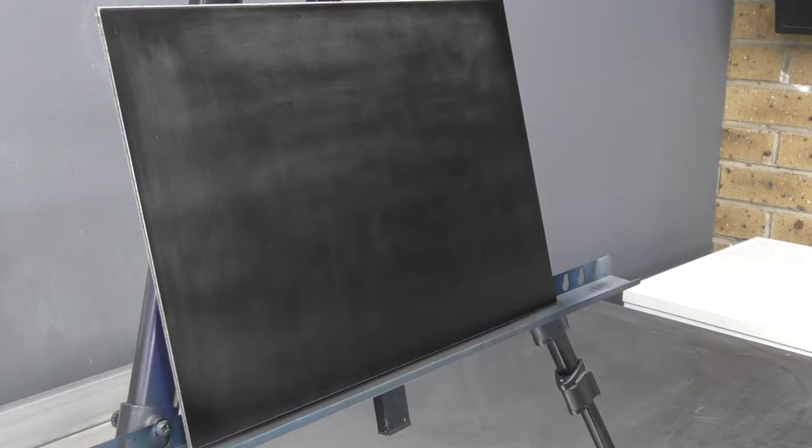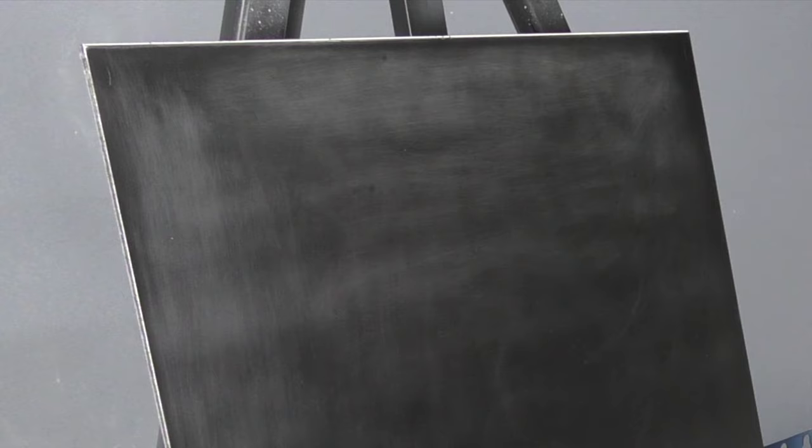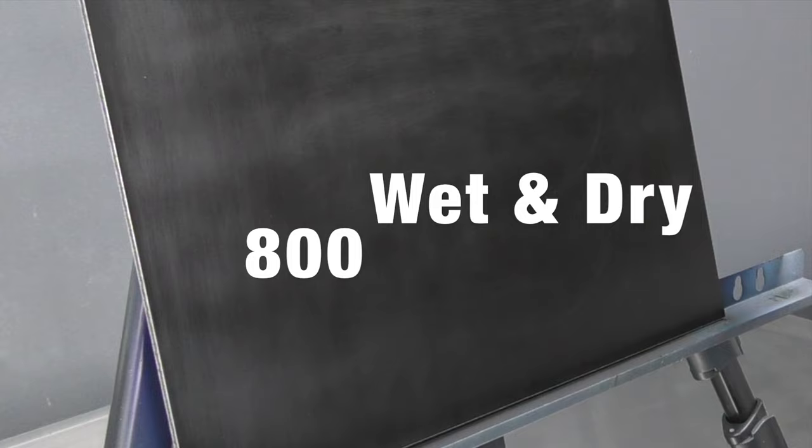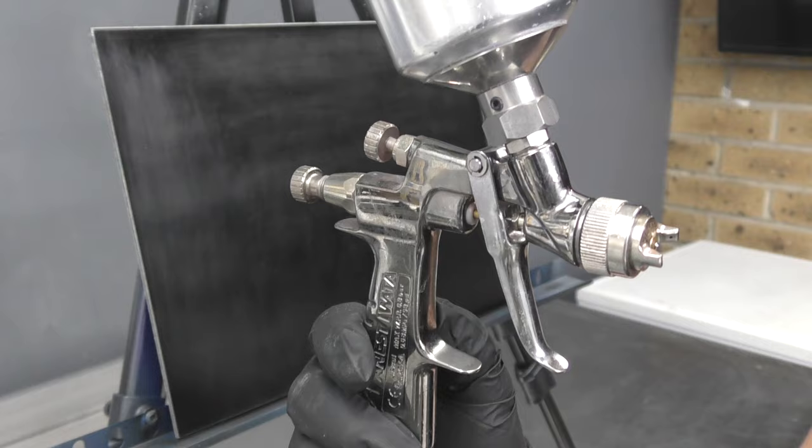So you can see this is an aluminum composite panel. I've base coated this in black and just given it a light sand with some 800 wet and dry. And now I'm going to spray a base coat of silver with my Iwata LPH80. This has got a 0.8 mil needle nozzle setup and the E2 air cap.